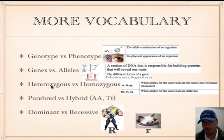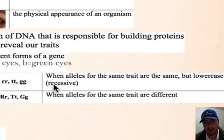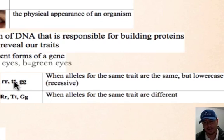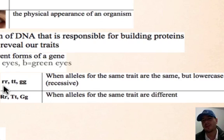Now let's look at heterozygous and homozygous. The root word 'hetero' means different, and 'homo' means same. Heterozygous is where you have one dominant and one recessive allele — they're both different. Homozygous means the same allele. For example, little r little r, little t little t, little g little g — all those are homozygous because they're the same. More specifically, since they're all lowercase, they're homozygous recessive. Recessive means lowercase; dominant means capital.